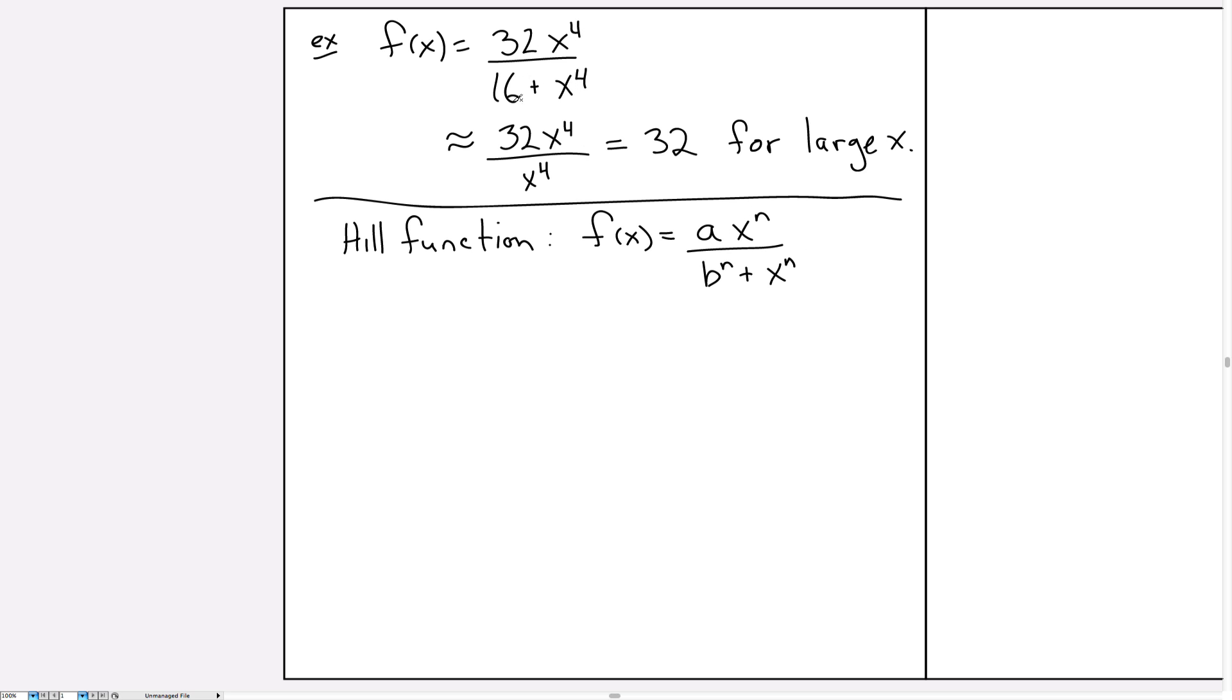But my constant here wasn't written as something to the n, it was just written as 16. But you'll notice 16 is the same as 2^4. So although I don't have it exactly in the Hill form, it's easy for me to switch it in this case to 2^4, and then I can see that b is exactly 2.